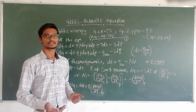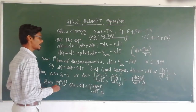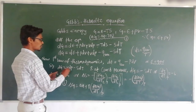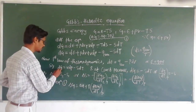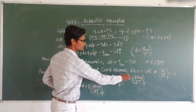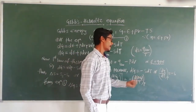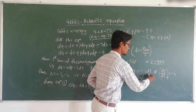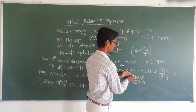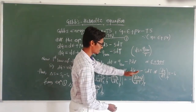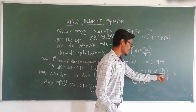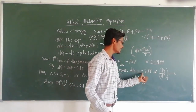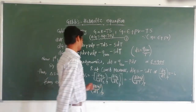At constant pressure, the V dP term cancels out, and we get DG equals minus S dT. Rearranging, we obtain DG divided by DT at constant pressure equals minus S, that is, minus entropy.